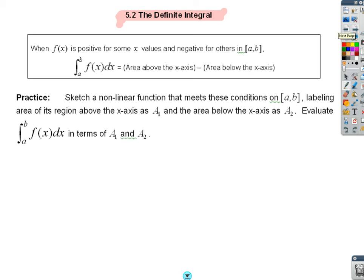So when f(x) is positive for some x values and negative for others, then my integral value for that section a to b is the total area above the x-axis minus the area below the x-axis. Again, notice area is always positive, so I will be subtracting. So they want me to sketch a nonlinear function that meets these conditions. Sketch me a nonlinear function labeling the area or region above the x-axis as A1 and the area below the x-axis as A2, and then evaluate it in terms of area 1 and area 2.